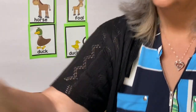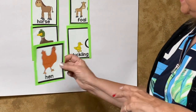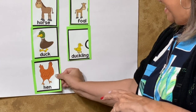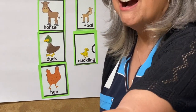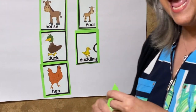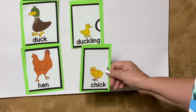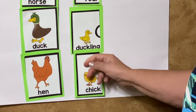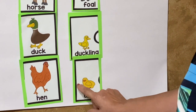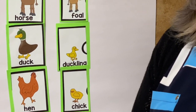You know what this animal is. It's a hen. What would you call the baby of a mommy hen? It would be a chick. A chick would be the baby of a mommy hen.